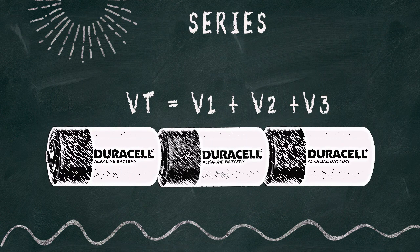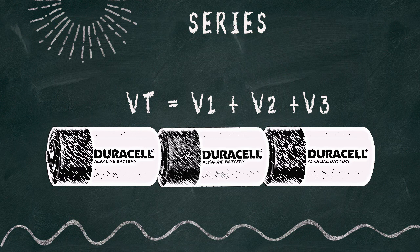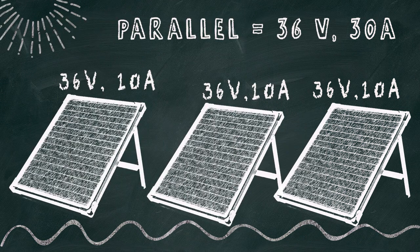With series connections, it is the opposite. The total voltage is the sum of the individual voltages, while the current is the average of each battery's current. Using the same 6-volt batteries yields 18 volts and 1 amp. Calculate the power, and it is the same 18 watts. Solar panels exhibit the same results.